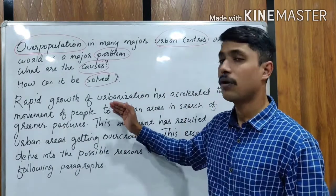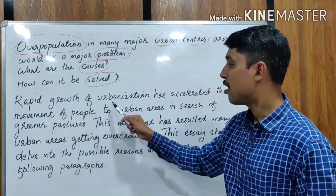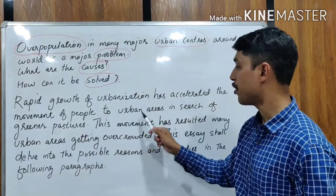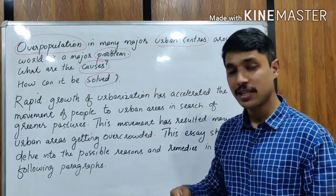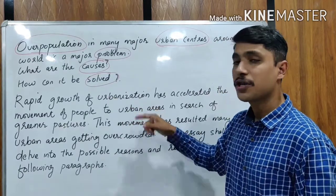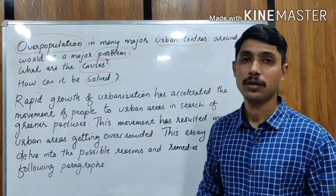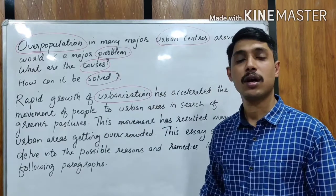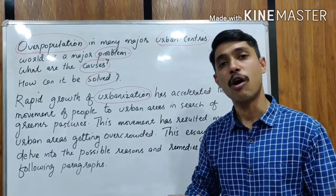Now we will see how the answer is written. The general statement is: 'Rapid growth of urbanization has accelerated the movement of people to urban areas in search of greener pastures.' Urbanization is a common phenomenon happening around the world — people moving to cities. So it's a general statement about a common thing.